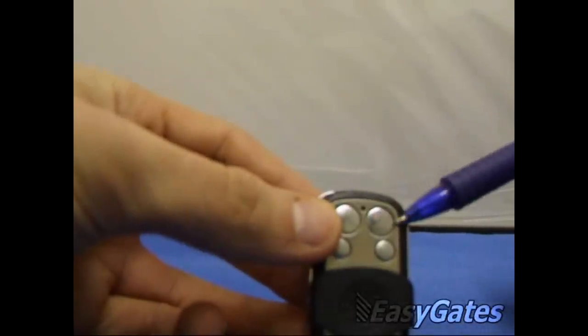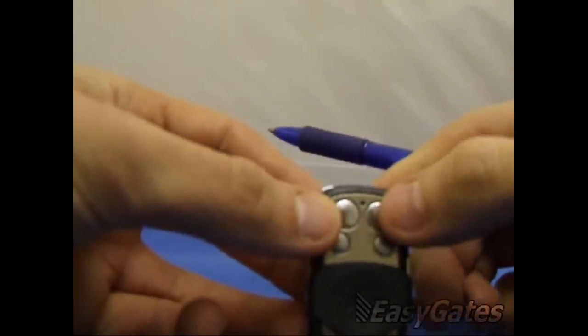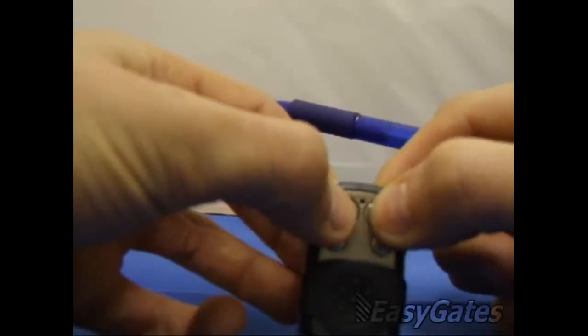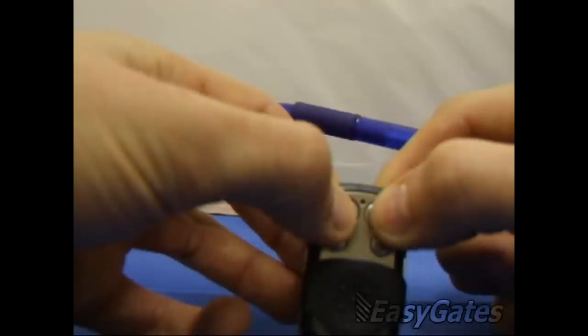At the top here you have the two buttons which you need to hold down to clear the remote's memory. Hold those down for around 20 seconds until the light flashes at the top. This basically clears the memory of the remote so it's ready to program into a new one.